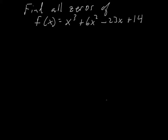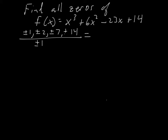The possible rational zeros are going to be ±1, ±2, ±7, ±14 over ±1, which simplifies to just ±1, ±2, ±7, ±14. Those are our choices. Since we don't have anything else to do, this is a guessing game at the start.